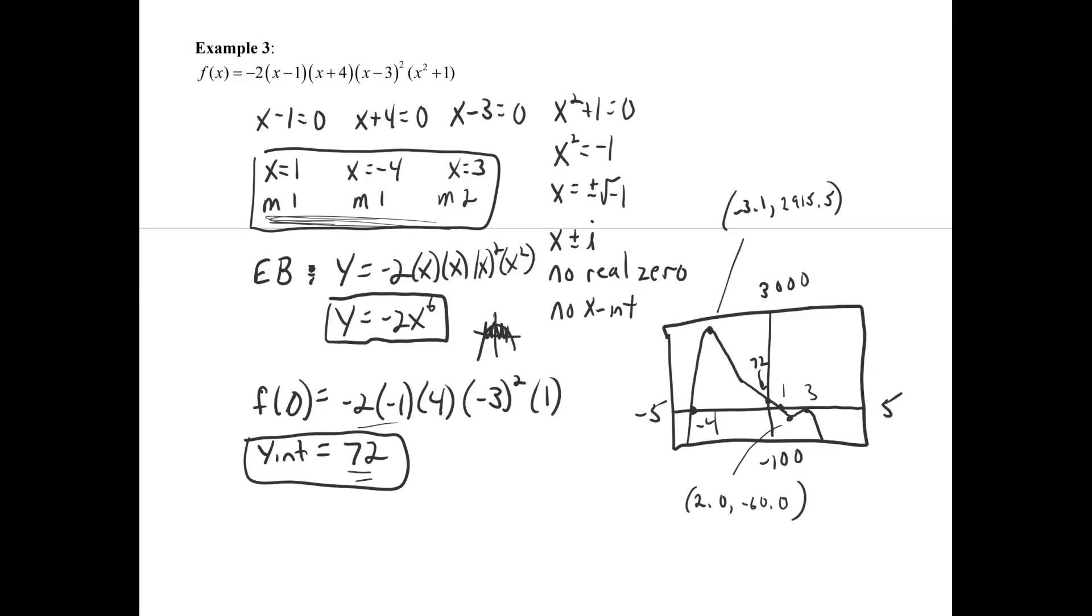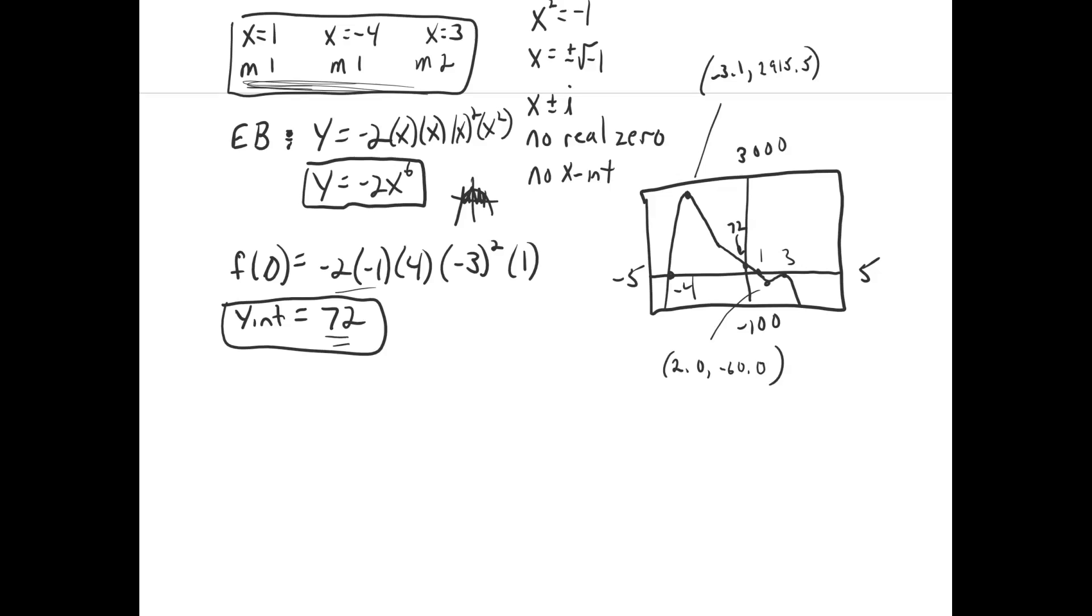So having found the local max and local min, we're ready for the last part of the problem, which is just to state the domain, which is all real numbers. Here's the range, which has a local max here at the highest point on the function is 2915.5, so the range goes from negative infinity up to that 2915.5. It includes that, but of course it doesn't include infinity.